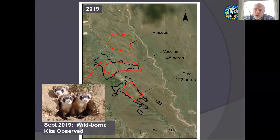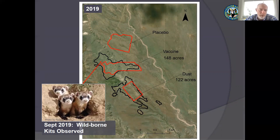In 2019 we saw wild-born ferret kits on the vaccine plot — a pretty decent indicator that this group of ferrets was choosing to call this vaccinated colony home. And in 2020, fall spotlight surveys again found ferrets in the vaccinated portion of the colony.